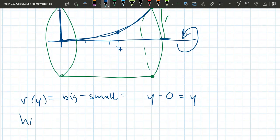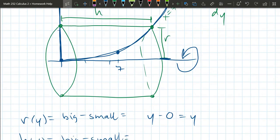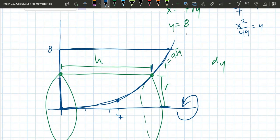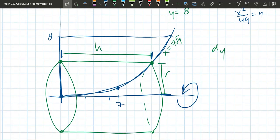Now we're going to look for the height h(y). Also big minus small. On this, the big is the right, the small is the left. So the small is constant. It's always right here.